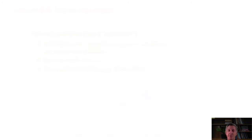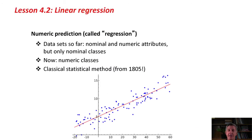We've only had nominal classes so far, so now we're going to look at numeric classes. This is a classical statistical method dating back more than two centuries. This is the kind of picture that you see. You've got a cloud of data points in two dimensions, and we're trying to fit a straight line to this cloud of data points, looking at the best straight-line fit.